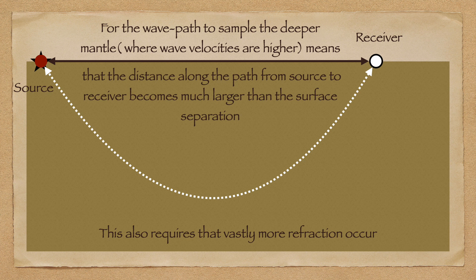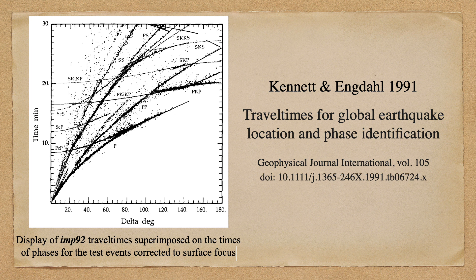In order for the P waves and S waves to get deep into the mantle where they can enjoy the higher velocities, that would greatly extend the length of the path that they travel, and would require extraordinary amounts of refraction in order for the waves to return to the surface. In short, flat-Earth models simply cannot be reconciled with the observational data we have for P wave and S wave arrival times, and we've barely scratched the surface of what phases we have available to us and what they can tell us about the Earth's interior.